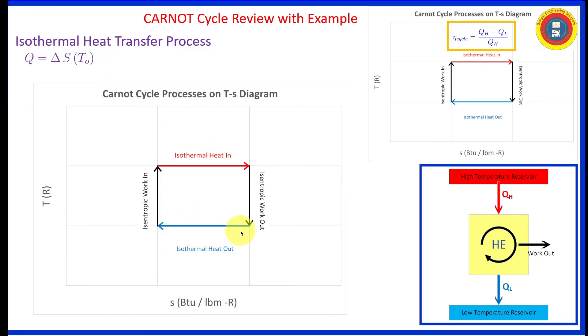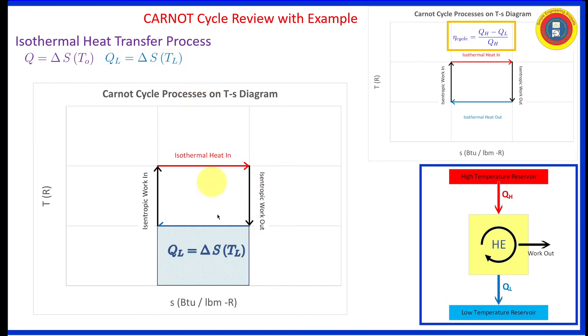Now let's do the same thing for isothermal heat out. The amount of heat rejection is based upon the same change in entropy times now the low temperature reservoir. And the area underneath the curve represents the amount of heat rejected to the low temperature reservoir.